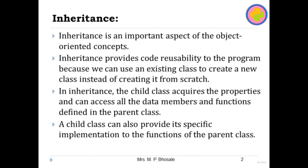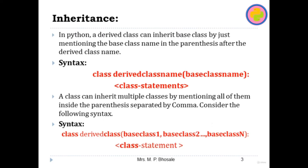A child class can also provide its specific implementation to the functions of the parent class. Inheritance includes two types of classes: parent class and child class, where the child class can inherit the properties of the parent class. In Python, a derived or child class can inherit a base or parent class by just mentioning the base class name in parenthesis in front of the child class name. Then put a colon and write the derived class statements.